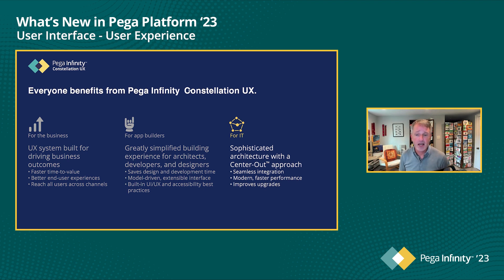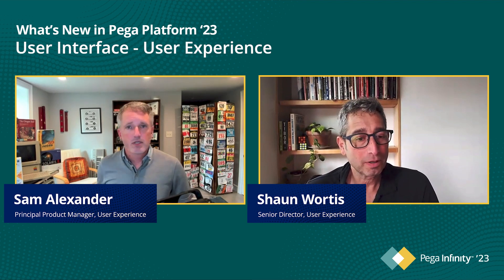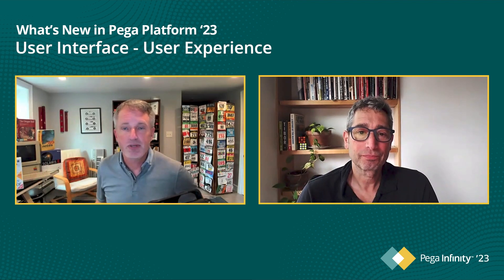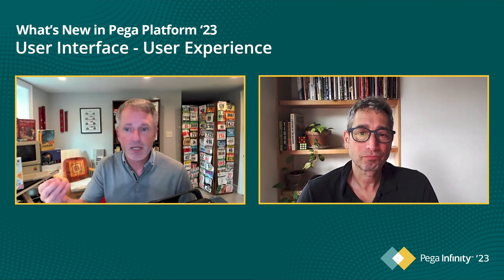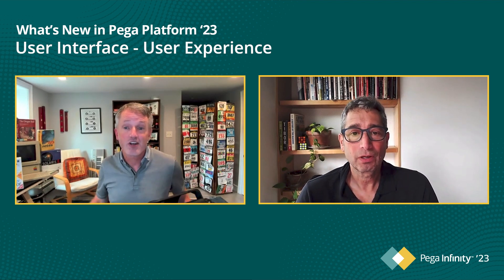All three groups - including IT - benefit from faster performance because Constellation is built on a modern architecture, and upgrades are seamless because the UX is provided for you. Lots of value to the business, to application builders, and to IT. It's not surprising that Constellation was such a big topic at this year's Pega World Inspire. So we've recapped Constellation UX and its value - now let's turn to what's new in Infinity 23, starting with improvements in the application authoring experience in App Studio.